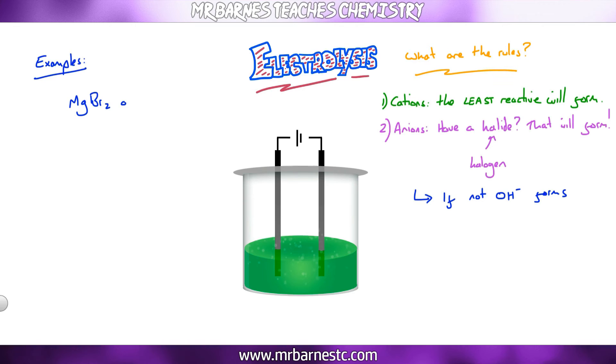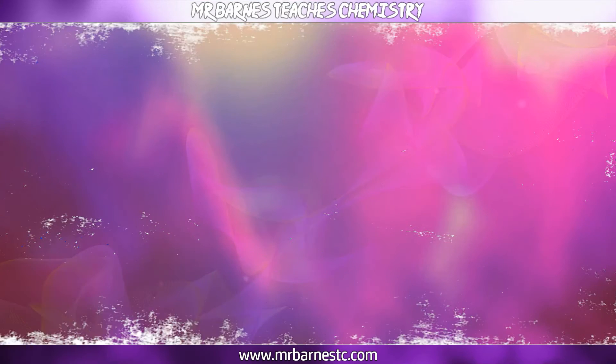Second example, magnesium bromide. You've got Mg2+, H+, Br-, and OH- in your solution. Out of the two, magnesium is in group 2, so that is more reactive. Your H+ is less reactive, that's going to form. You've got a halide, which is bromine, so that is going to form. So your H+ turns back into H2, and your Br- turns back into Br2.